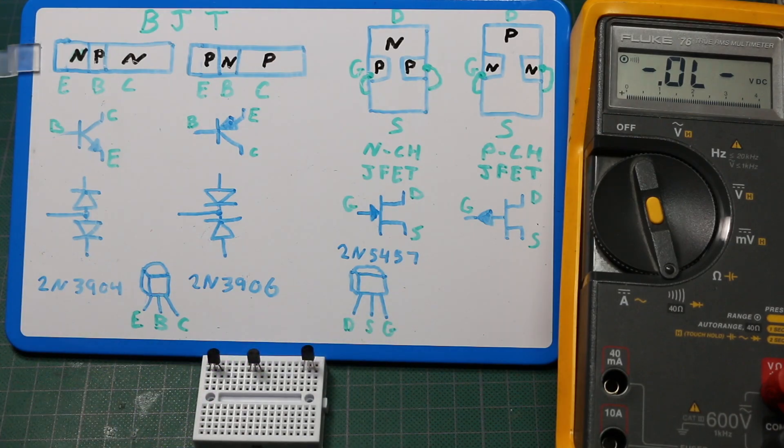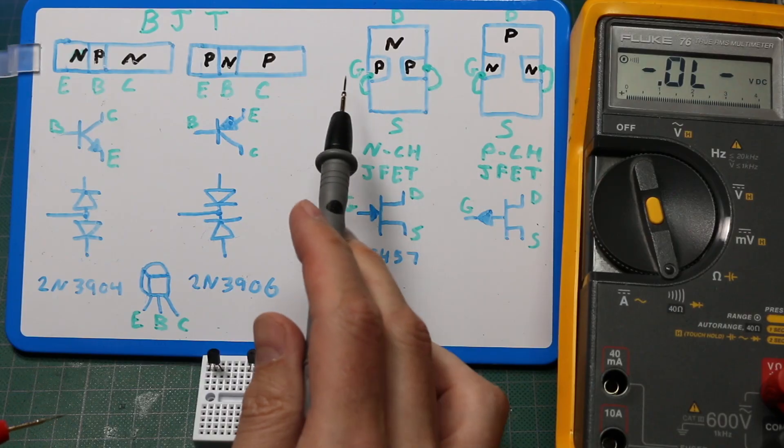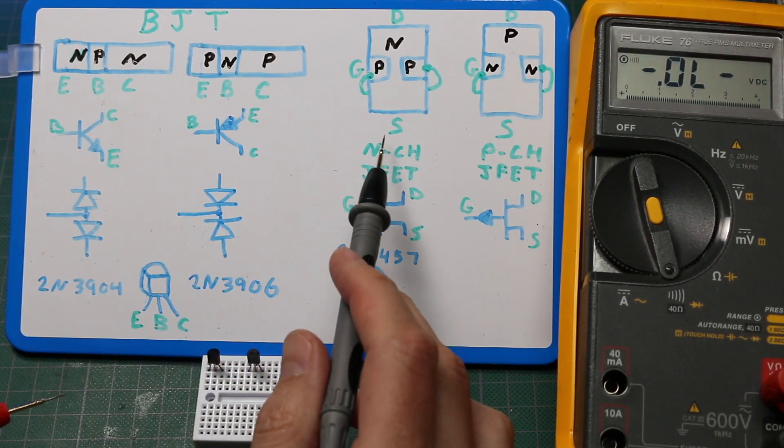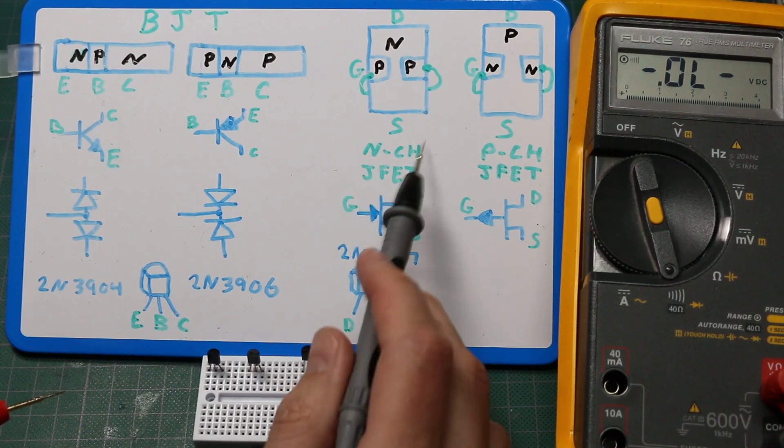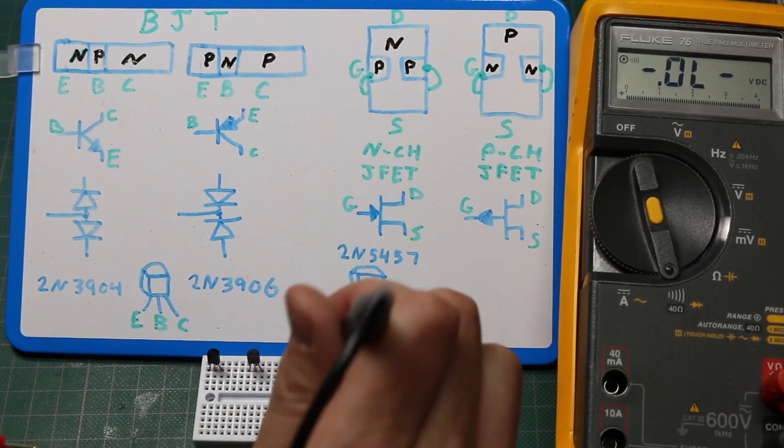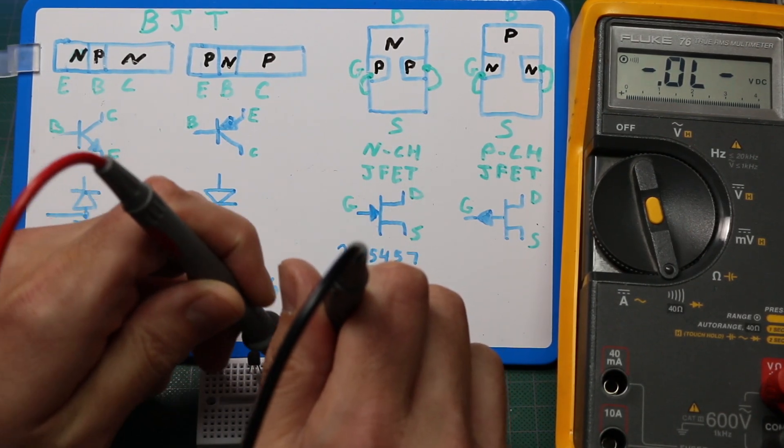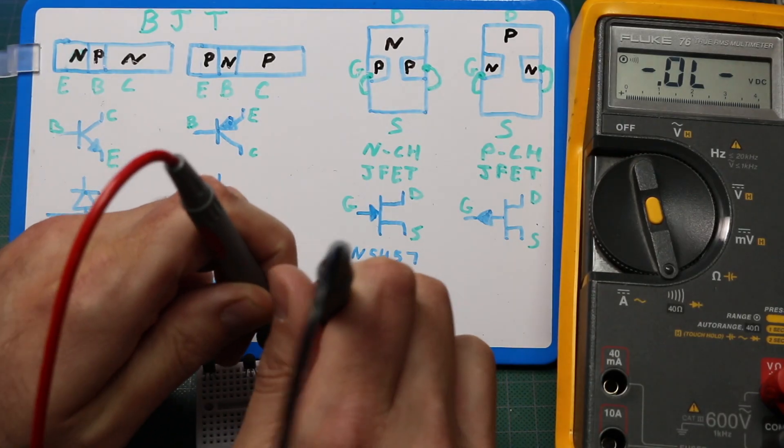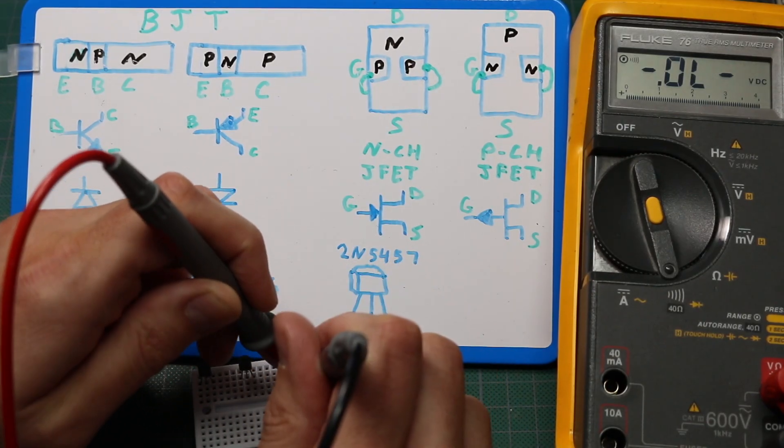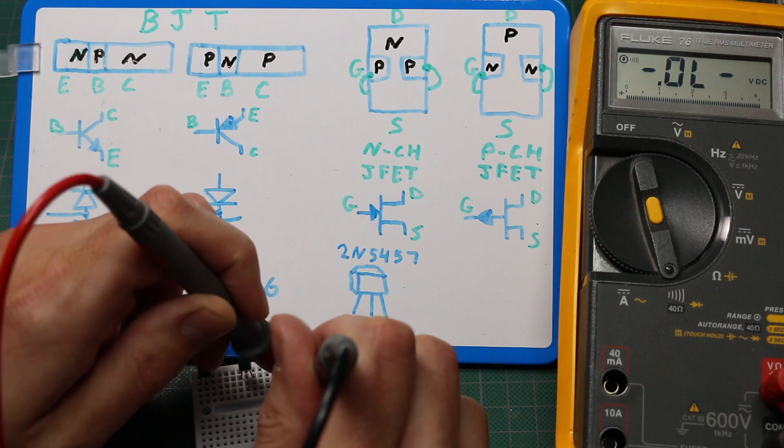So first I'll check the PN junction between the gate and the source in reverse bias. So I should see an open circuit with a negative on the gate and a positive on the source and it's open circuit. Same with the positive on the drain and the negative on the gate.